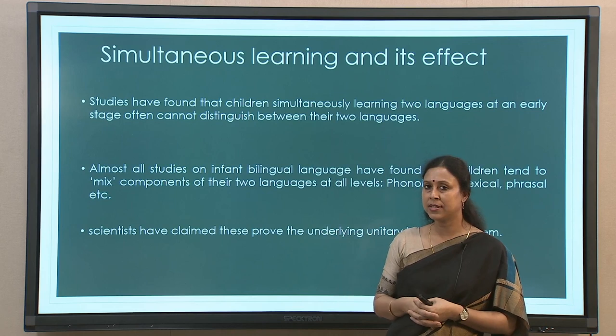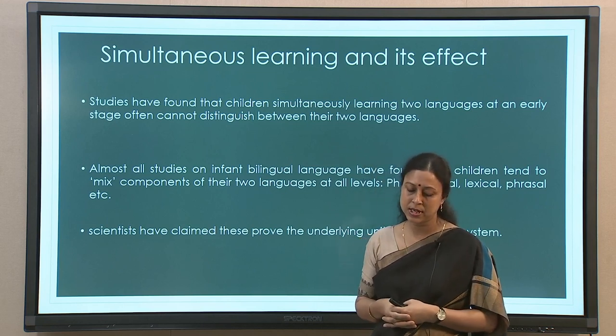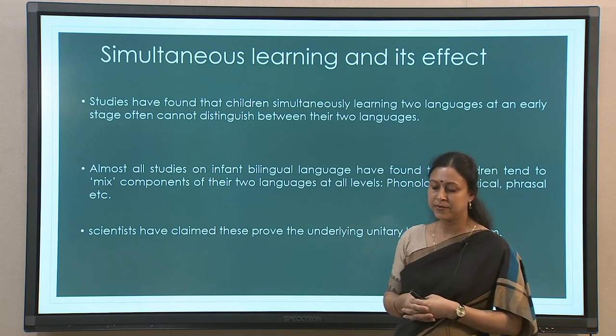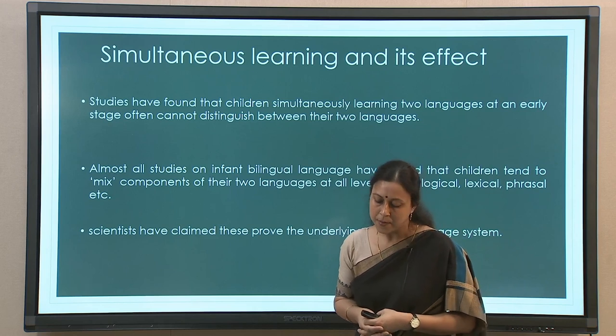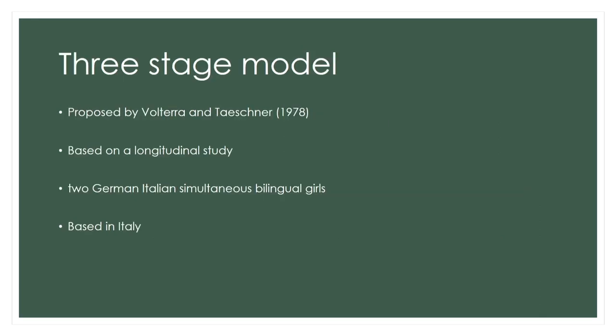It is a very interesting domain of research — a lot of complex and contradictory findings have been found. We will try to see the broad points as to what are the nuances within simultaneous bilingualism. Studies have found that simultaneously learning two languages at an early age makes children unable to distinguish between their languages. There is a lot of mixing within the simultaneous bilingual's output — when simultaneous bilingual children speak at an early age, there is a lot of mixing that happens between the two languages at all levels: phonological, lexical, phrasal, etc. This is taken as an example of an underlying unitary system, though it is not as simple as that.